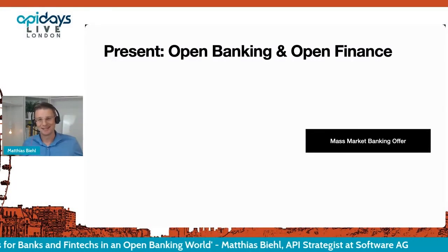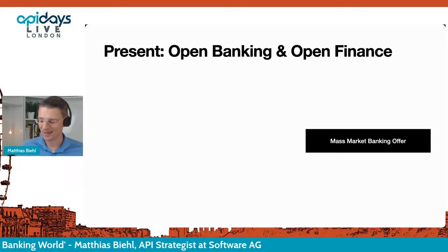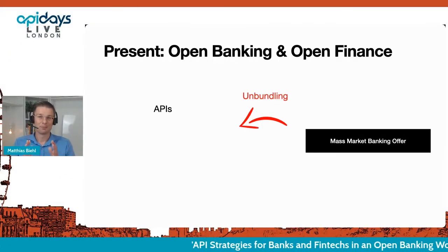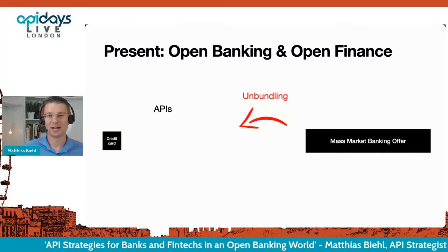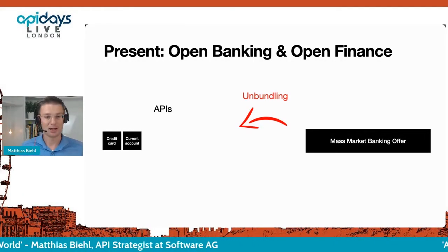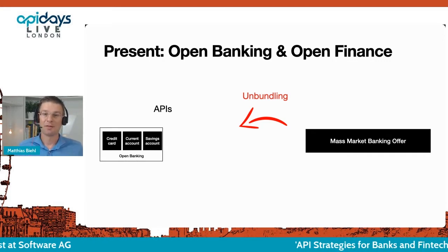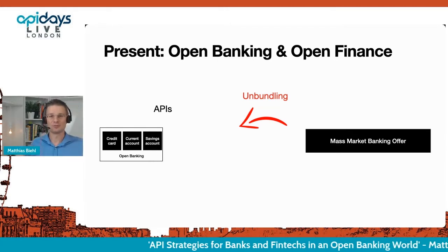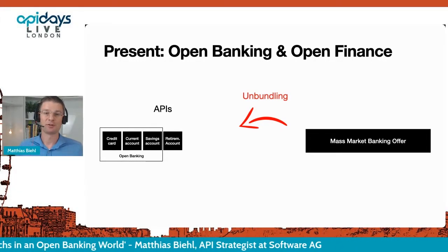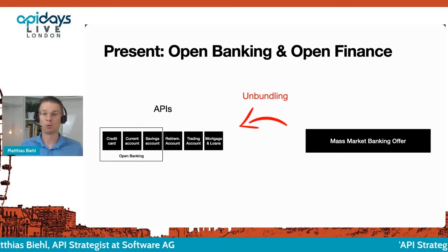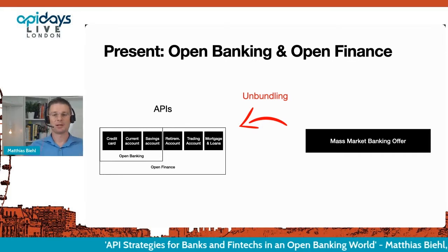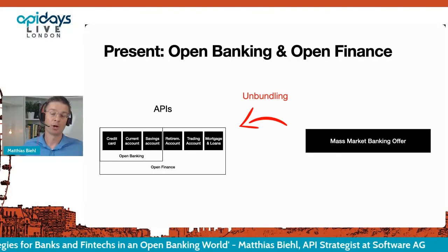Now with open banking and open finance, we start with this mass market banking offer that we've created, and what we do now is unbundling. Unbundling means we take this big offer and create separate products for it. These products are technology products now, represented in the form of an API — a credit card API, a current account API, a savings account API. This is what we typically call open banking, the scope of PSD2 and similar regulations. And then we also have APIs for retirement accounts, trading accounts, mortgages and loans — that bigger scope is what we call open finance.